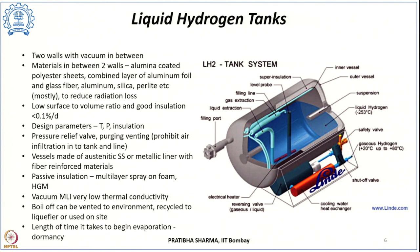The design of a liquid hydrogen tank consists of two walls — an outer wall and an inner wall — with vacuum in between. These are super-insulated vessels. Between the two walls, materials used include alumina-coated polyester sheets, combined layers of aluminium foil and glass fibre, aluminium, silica, or perlite — with perlite being mostly used. Multi-layer insulation is introduced into the vacuum region to reduce radiation losses. With a lower surface-to-volume ratio and very good insulation, boil-off losses can be reduced to less than 0.1% per day.